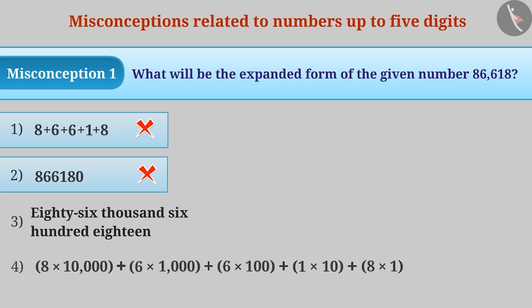For some, expansion of a number means writing the number in letters or words and thus we get the result 86,618 which again is incorrect. The correct understanding is that option 4 is the right answer.